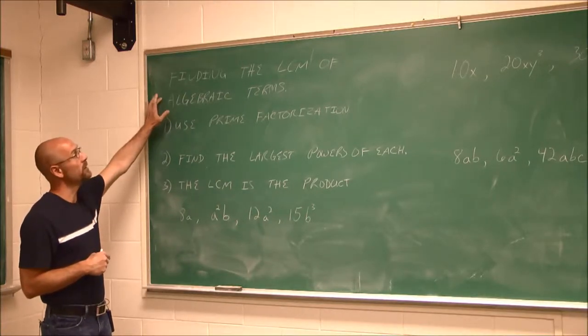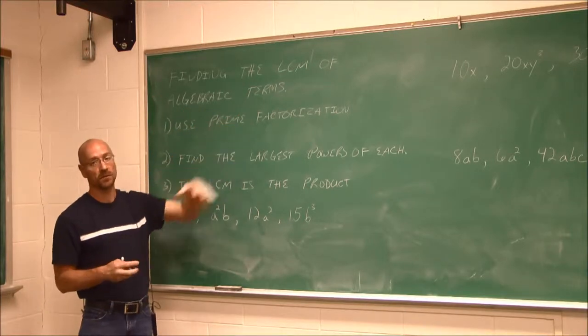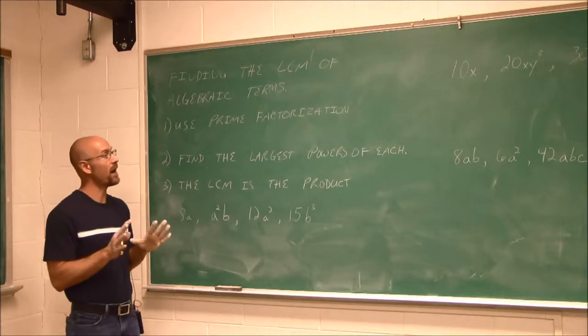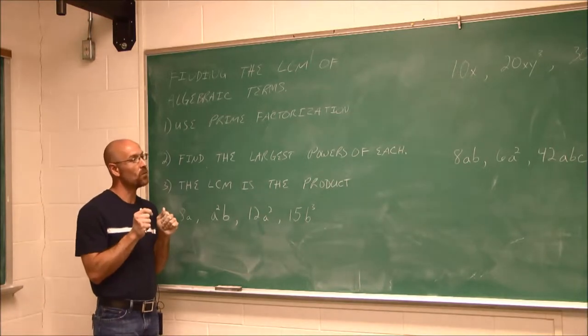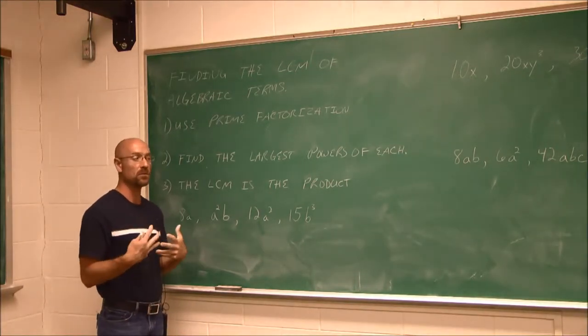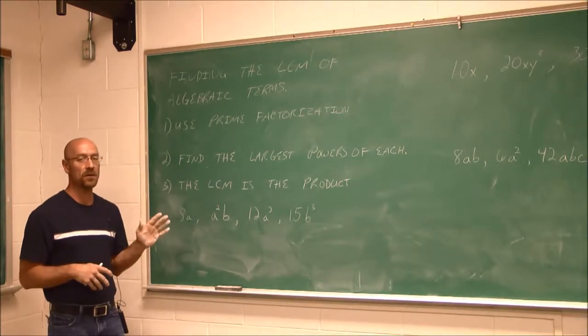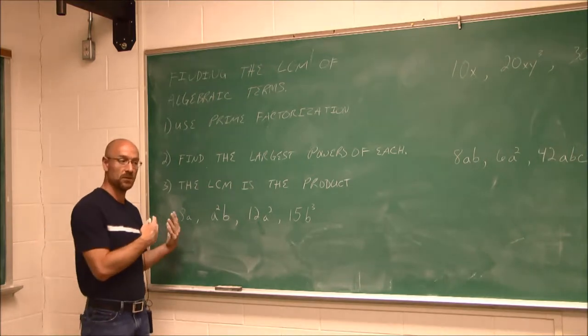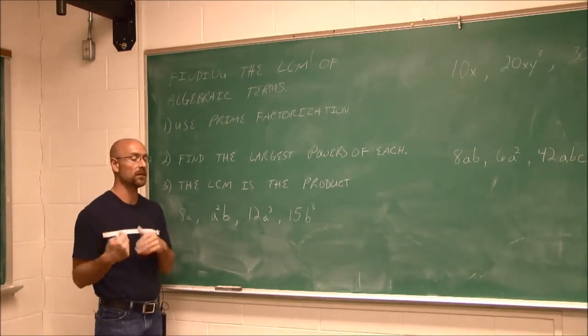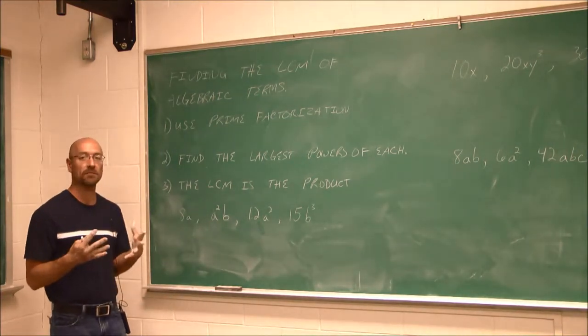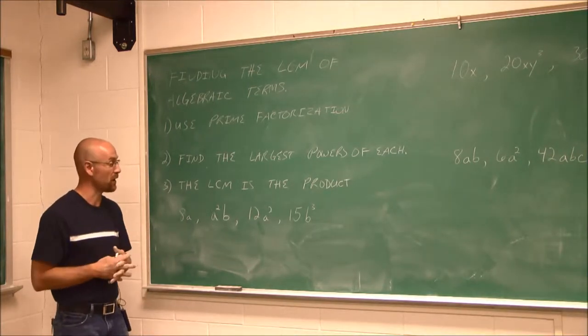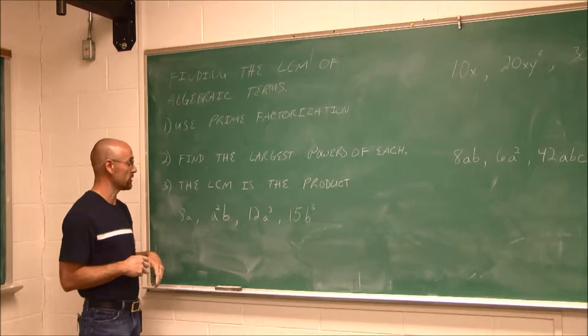We're going to look at finding the least common multiple of algebraic terms. Sometimes we have variables. Now, don't let this panic you. One nice thing to look at as a perspective is to say variables are actually easier to find their prime factors than numbers, as we've seen in the previous section, because we have to treat a variable as a prime number. So we don't have to factor it down. It's factored down for us, essentially.